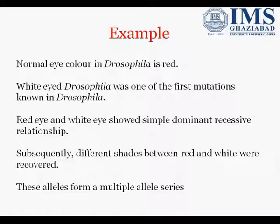As an example, we take eye color in Drosophila melanogaster, which provides a very interesting example of multiple alleles. White-eyed Drosophila is the mutant form and red-eyed is the normal or wild type. Red and white show a dominant-recessive relationship: red is dominant and white is recessive.